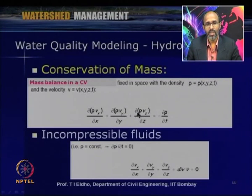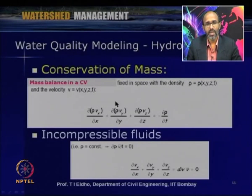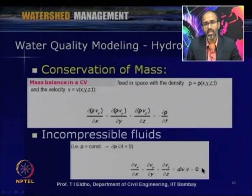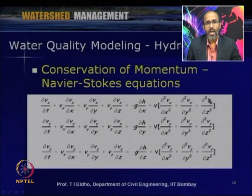For hydrodynamics, we represent governing equations in terms of conservation of mass — the continuity equation. Here Vx, Vy, and Vz are velocity components in x, y, z directions; rho is density; and t is time. For incompressible fluid like water, this reduces to: ∂Vx/∂x + ∂Vy/∂y + ∂Vz/∂z = 0. The continuity equation is derived from conservation of mass.